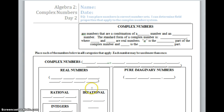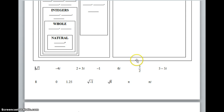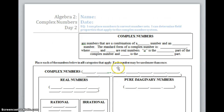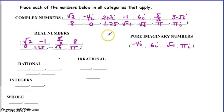Now practice classifying numbers like we did in class. Take the list at the bottom and remember every number is a complex number, so start by placing all of them in the complex numbers section. Then classify them as real number only or pure imaginary only, and keep classifying if they're real. For the answers: all should be in complex numbers, eight are real numbers, and four are pure imaginary. For irrational, only pi, square root of 2, and square root of 6 are irrational.